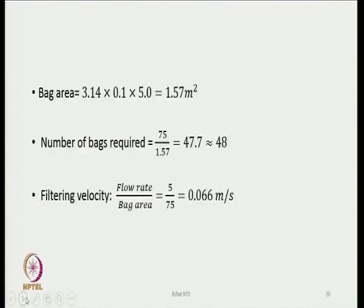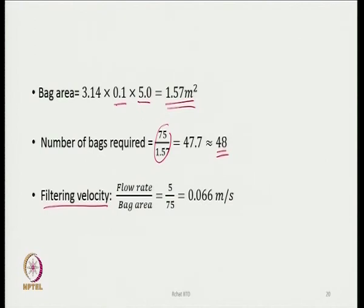If the bag area is pi times D times L — this is the diameter and this is the length — this is the area of a single bag. How many bags we need is 75 divided by the area of individual bags, which gives a figure of 47.7 — that means we need almost 48 bags. The filtering velocity — that is the phase velocity of the air — is flow rate divided by bag area: 5 divided by 75 equals 0.066 meters per second.